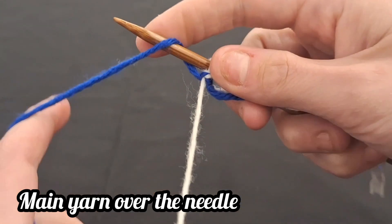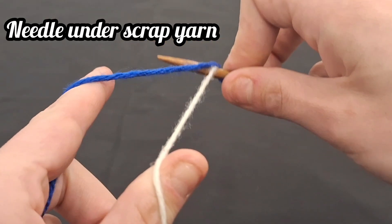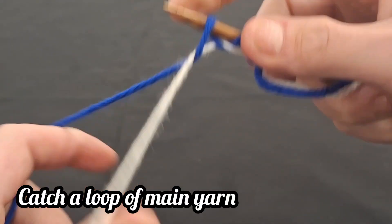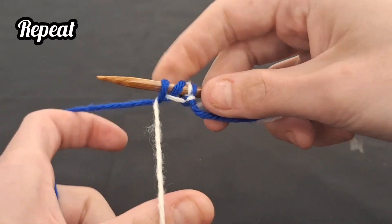So you will simply bring the main yarn over the needle, not unlike the yarn over increase. Bring your needle under the scrap yarn, catching the main yarn, and drawing up a loop of the main yarn with it. And repeat these two steps.